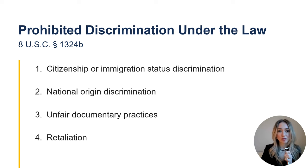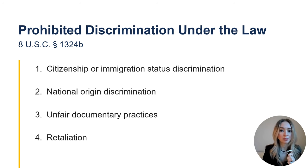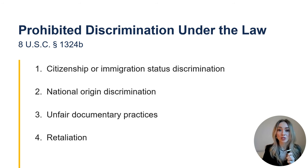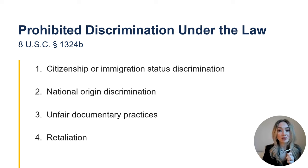The law that my office enforces prohibits four things. We'll go into more detail about each of these types of unlawful actions in today's presentation. Unfair documentary practices is the most common type of discrimination and many people don't even know it's illegal. IER operates a free employer hotline. You can call anonymously to ask questions about avoiding discrimination based on citizenship, immigration status, or national origin. The employer hotline number is 1-800-255-8155 or 1-800-237-2515 for those with hearing disabilities.